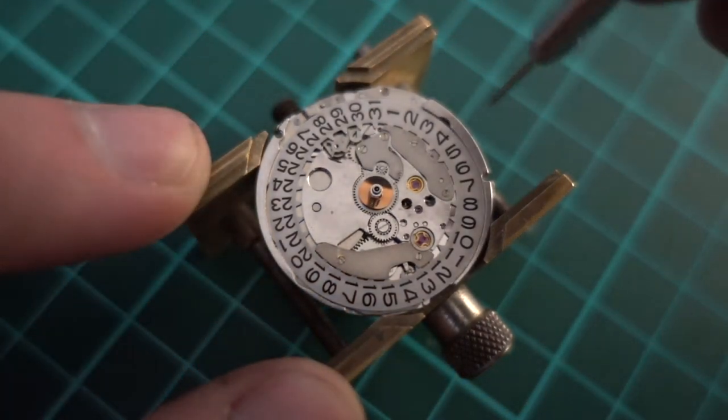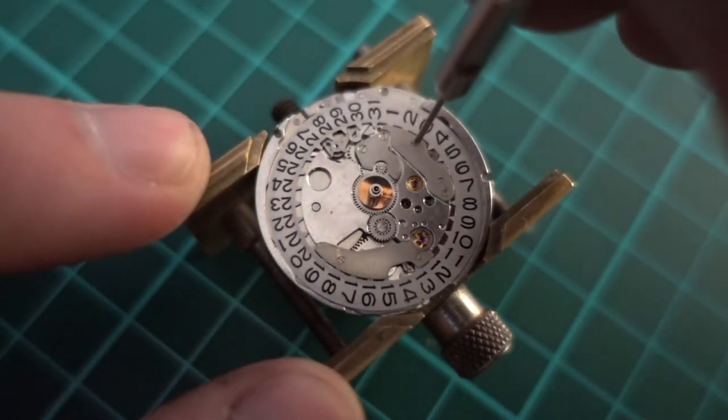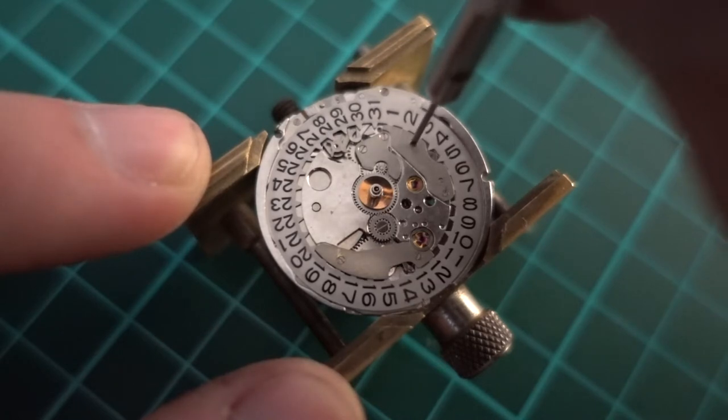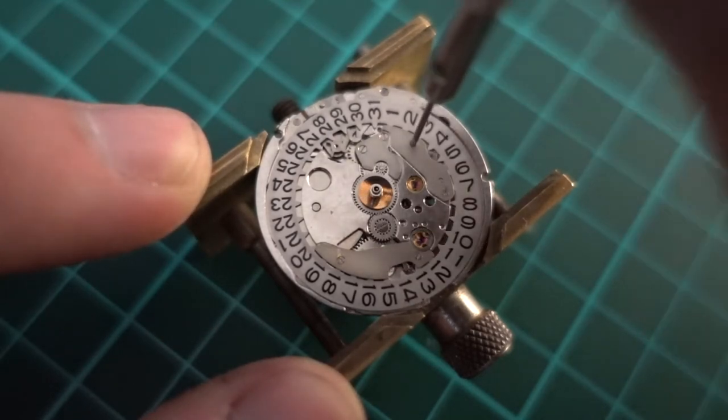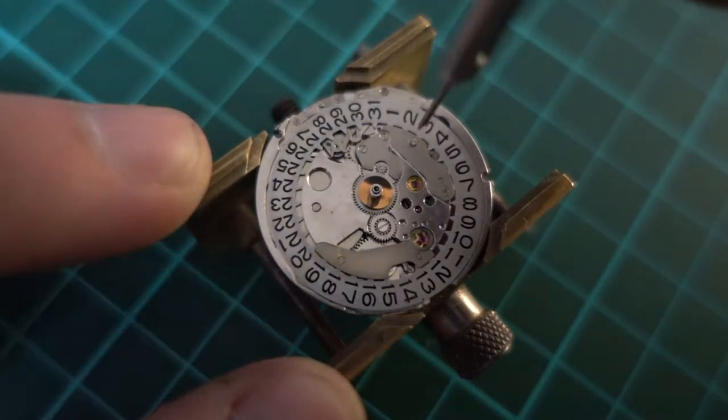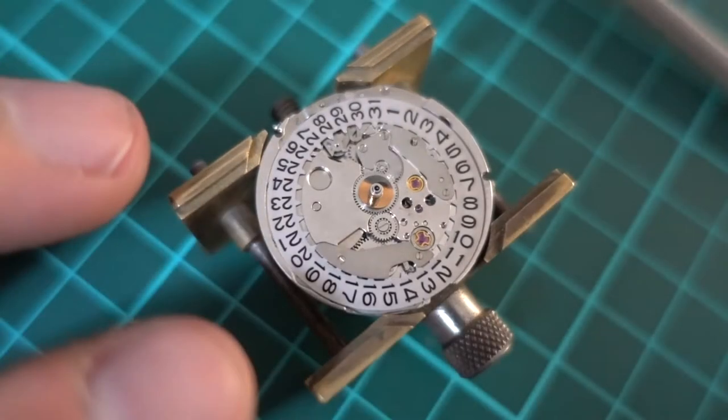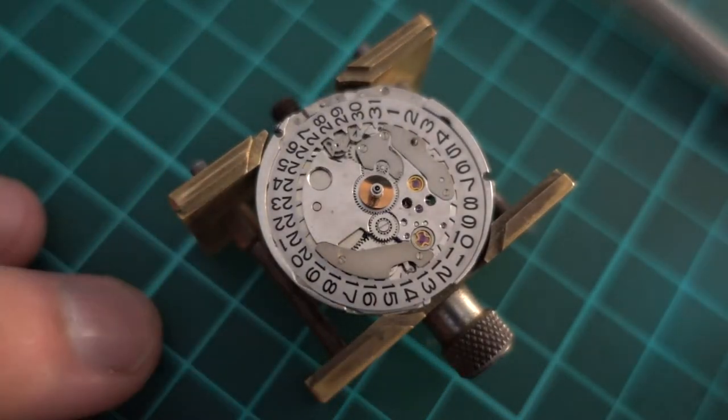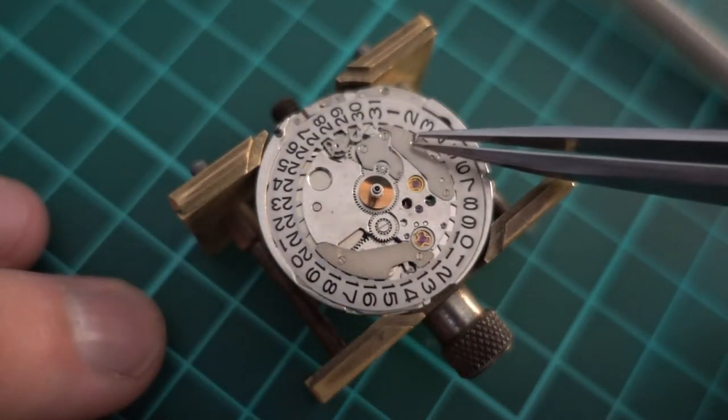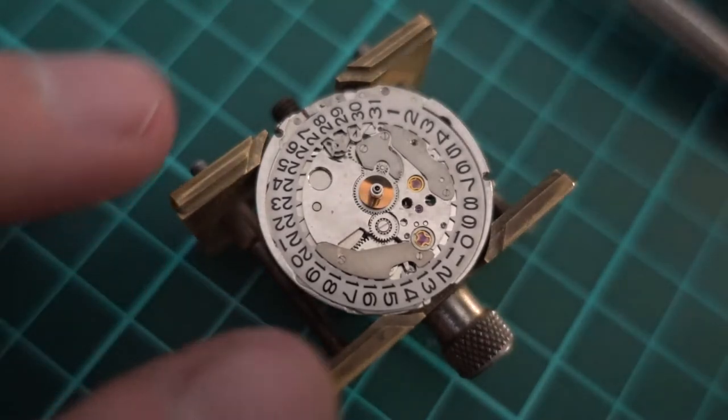Alright, in part 2 of this video I'm going to pull apart the movement of the watch. I was in a bit of an awkward situation when doing this with challenging lighting conditions, so you're going to see the watch move around a little bit.